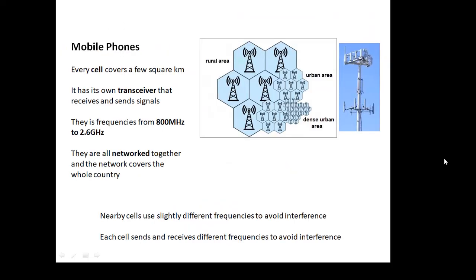Mobile phones are called cellular phones because there's a cell, and each cell has a transceiver which receives and sends signals. The whole country is covered in lots and lots of cells. The more populated an area is, the closer the cells will be together. Mobile phones use a range of frequencies from 800 megahertz (0.8 gigahertz) up to 2.6 gigahertz — very much microwaves. They are all networked together covering the whole country, and each cell uses different frequencies to avoid interference.